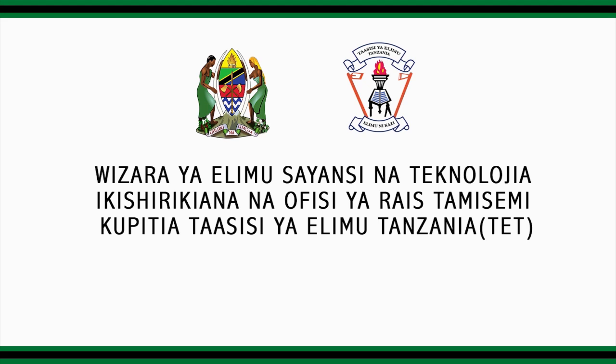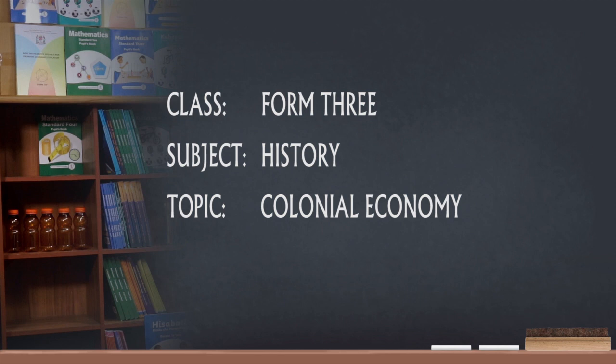Number 1: Colonies were expected to provide raw materials, both agricultural products and minerals. These were highly needed by European nations so as to meet industrial demands. Examples of agricultural materials included cotton, coffee, sisal, pyrethrum, cocoa and palm oil, as well as minerals like gold, copper and diamond.